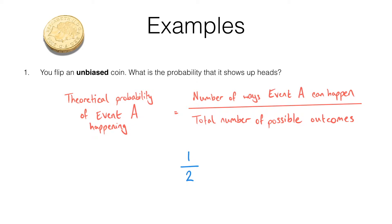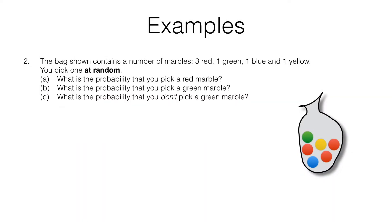We can use this notation: P for probability that it shows up heads equals a half. You may be thinking that formula is too complicated for something as simple as flipping a coin, but as we do more examples you'll see how the formula is helpful.